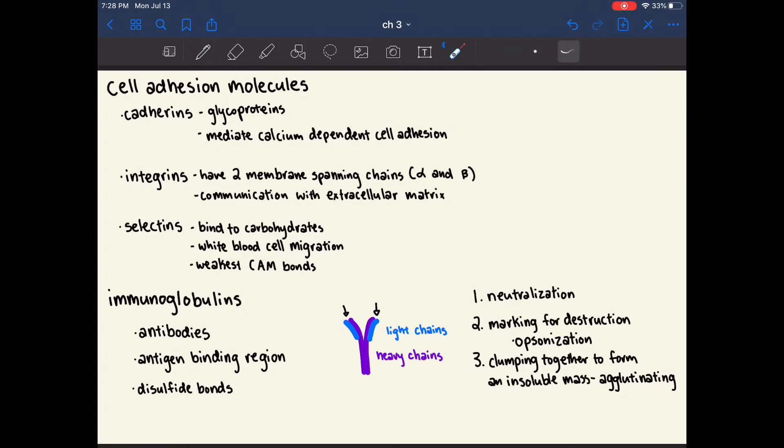There are three options once an immunoglobulin or an antibody senses an antigen. The first is neutralization, which means that they neutralize the threat and it's no longer a threat. The second is marking for destruction, and this is called opsonization. So when they mark an antigen for destruction, a different type of cell comes and digests or breaks apart the antigen. The third option is that the antibody can clump together with the antigen to form an insoluble mass, and this will precipitate out and will be digested by a different type of cell. This is called agglutinating.